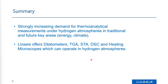The instrument classes Linseis offers for measurements under hydrogen atmospheres are our pushrod dilatometers, optical dilatometers, thermo-gravimetric balances, calorimeters, DSCs, combined instruments such as TG-DSC, and it is also planned to support our thermophysical instruments for measurements under hydrogen — to measure thermal constants, charge carrier concentrations for semiconductors, and so on.